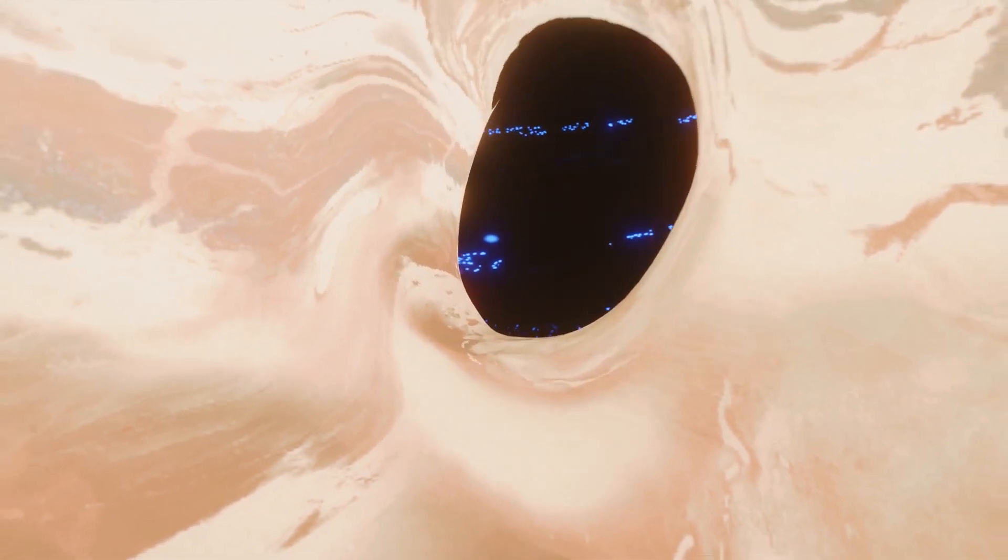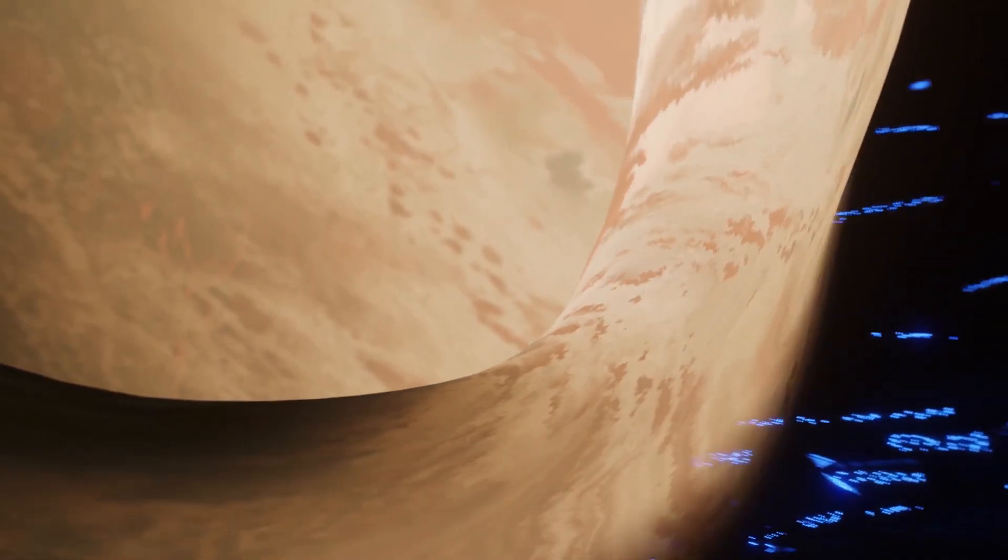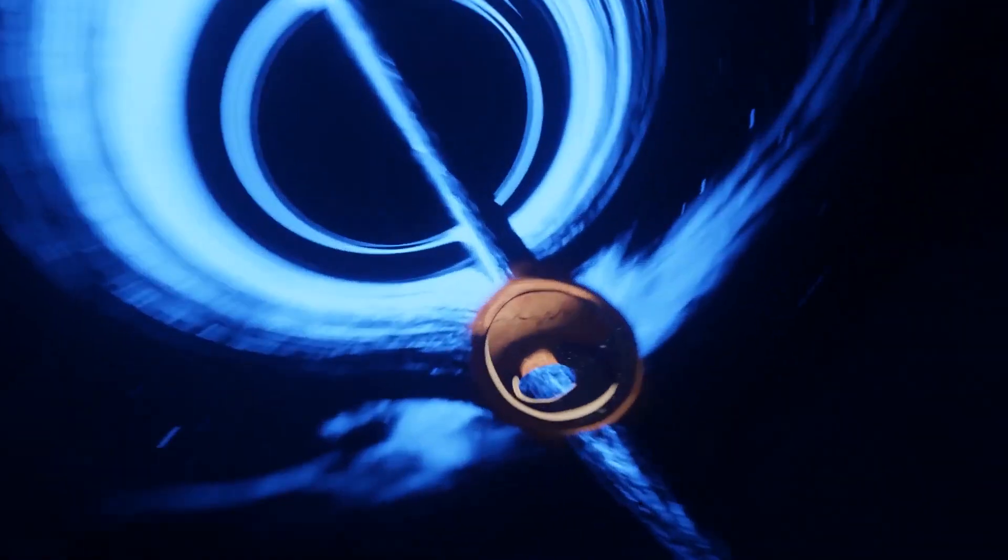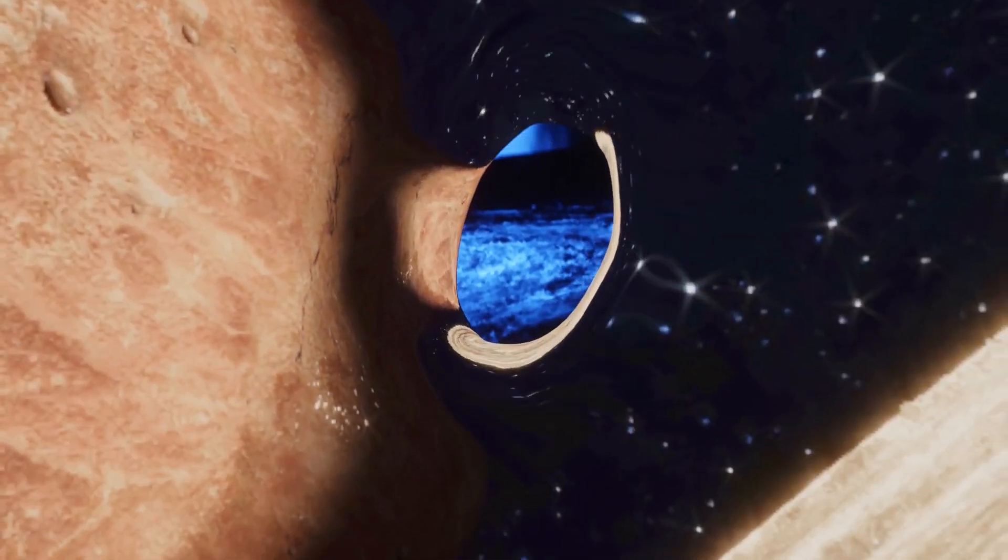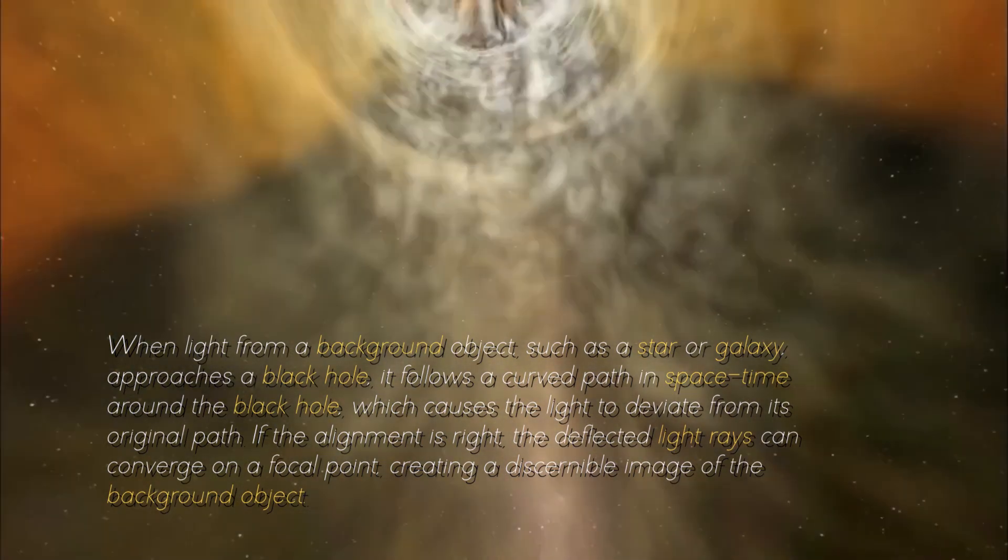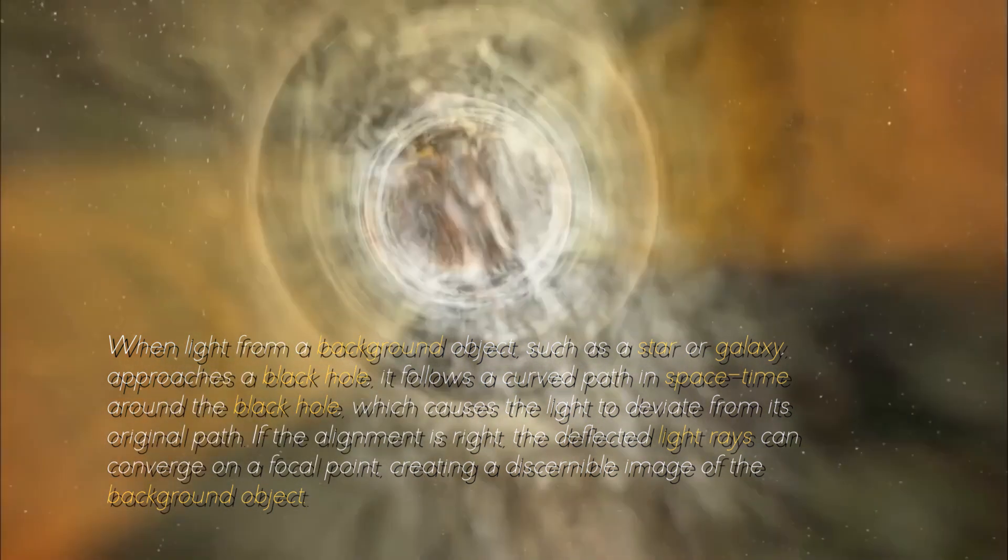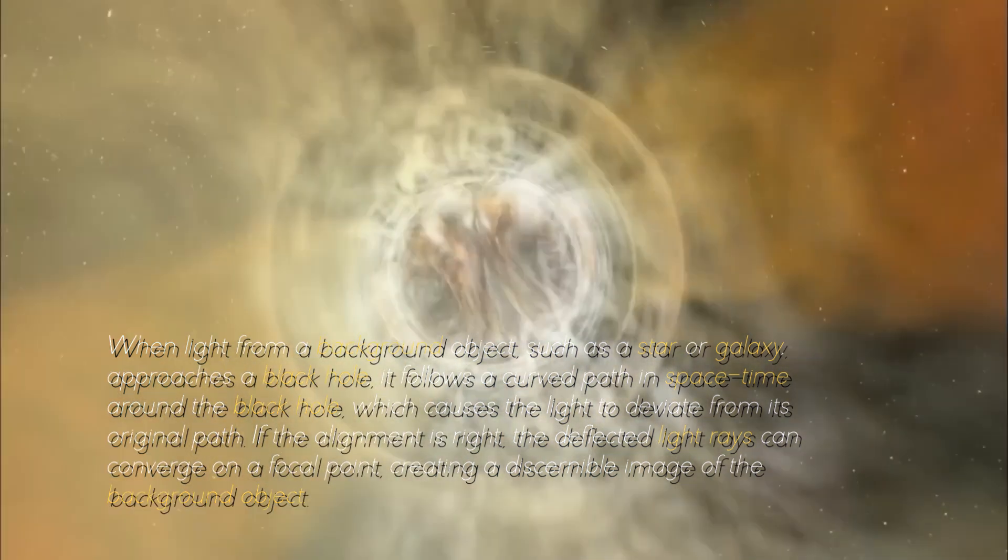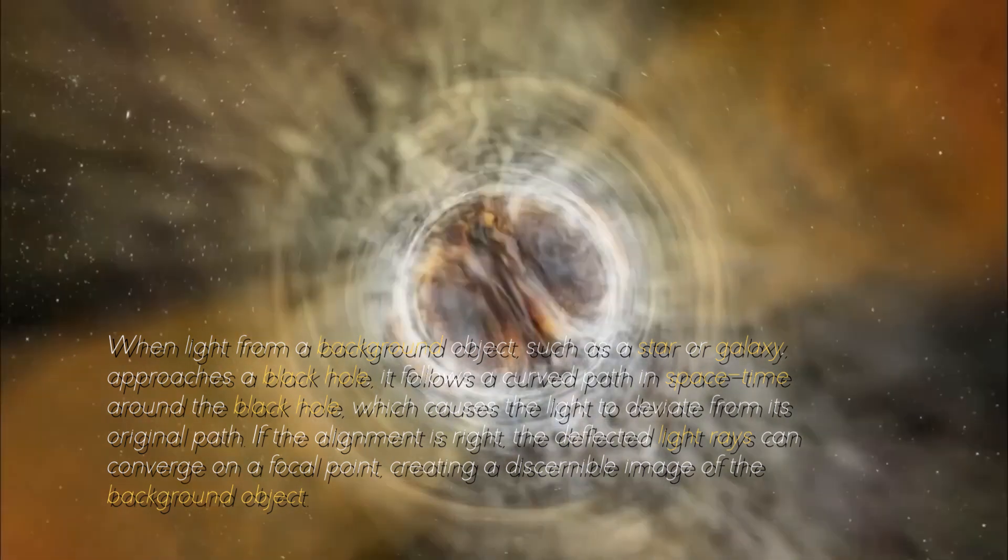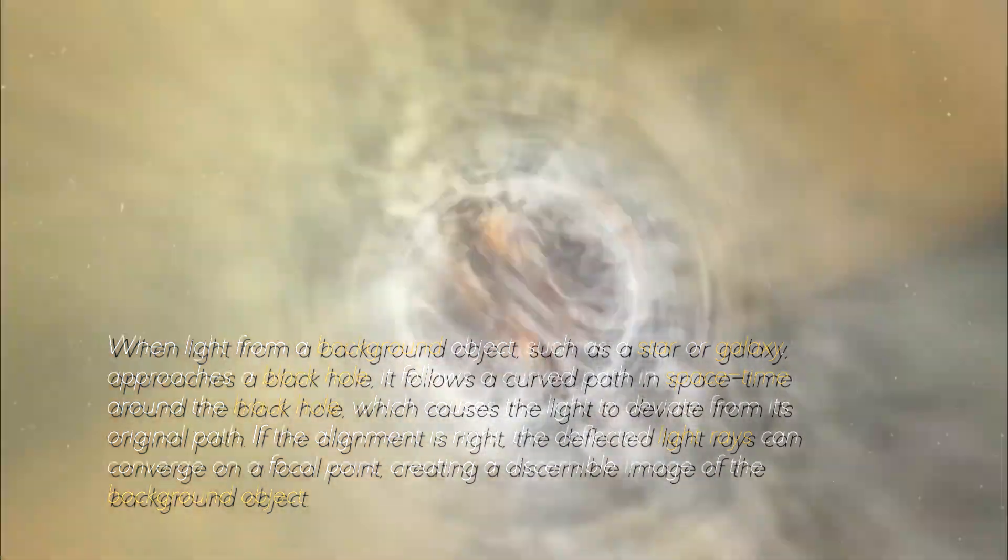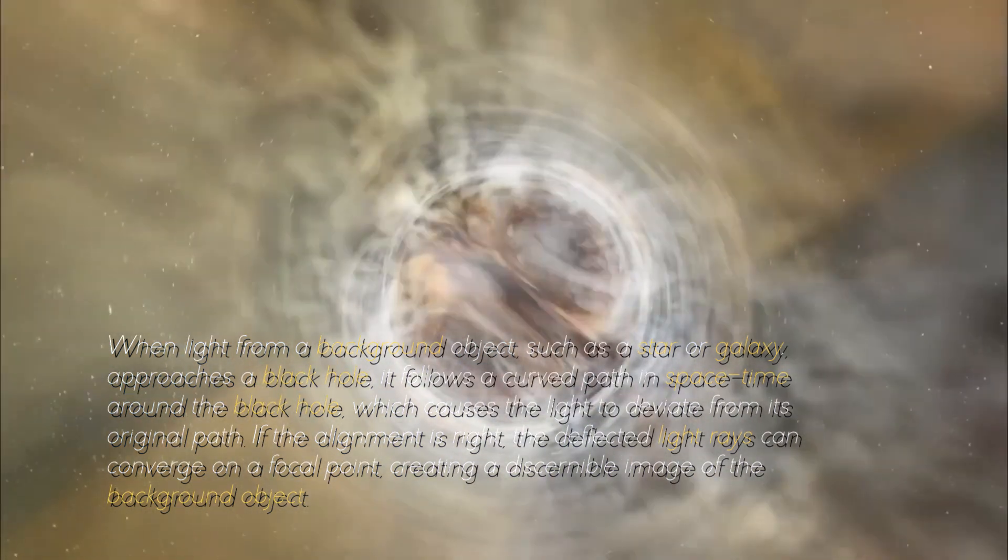Black holes, in particular, represent one of the most extreme examples due to their incredible mass and compact size, leading to very pronounced lensing effects. When light from a background object, such as a star or a galaxy, approaches a black hole, it follows a curved path in spacetime around the black hole, which causes the light to deviate from its original path.